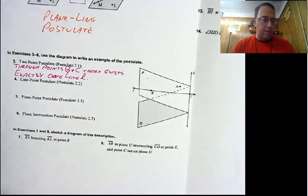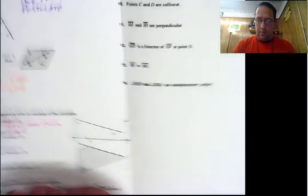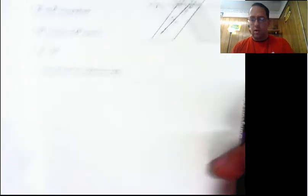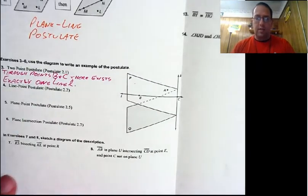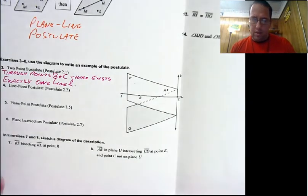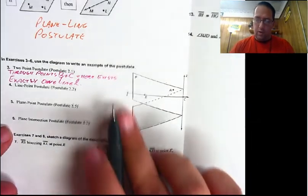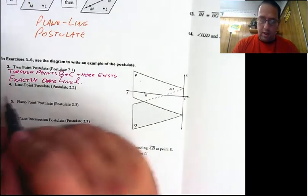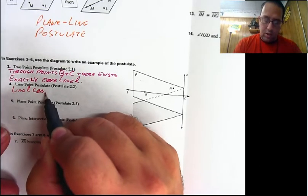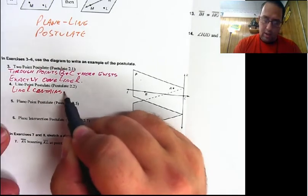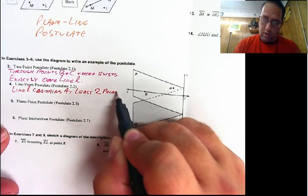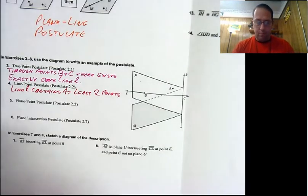Next, the line-point postulate. What did that one say? A line contains at least two points. So we need a line, and we need to say that it has at least two points, and we want those points to be visible in the diagram. Line K only has one point shown, so let's use line L again. So: line L contains at least two points — and it could have more.